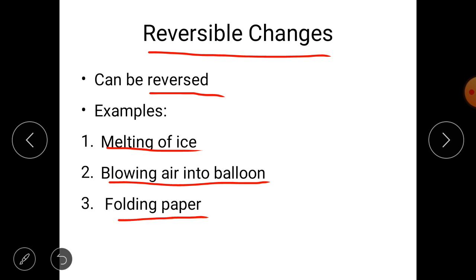Third is folding paper. If you have folded a paper and on unfolding it the shape will be again gained. So in this manner these are the changes which can be reversed. That's why they have been classified as reversible change.